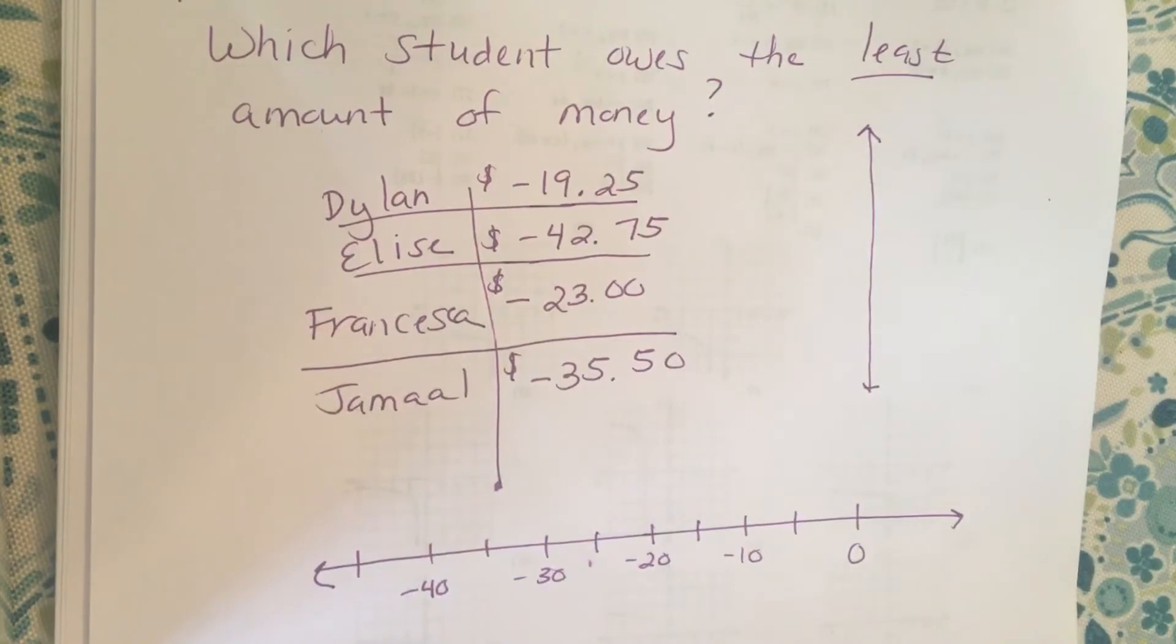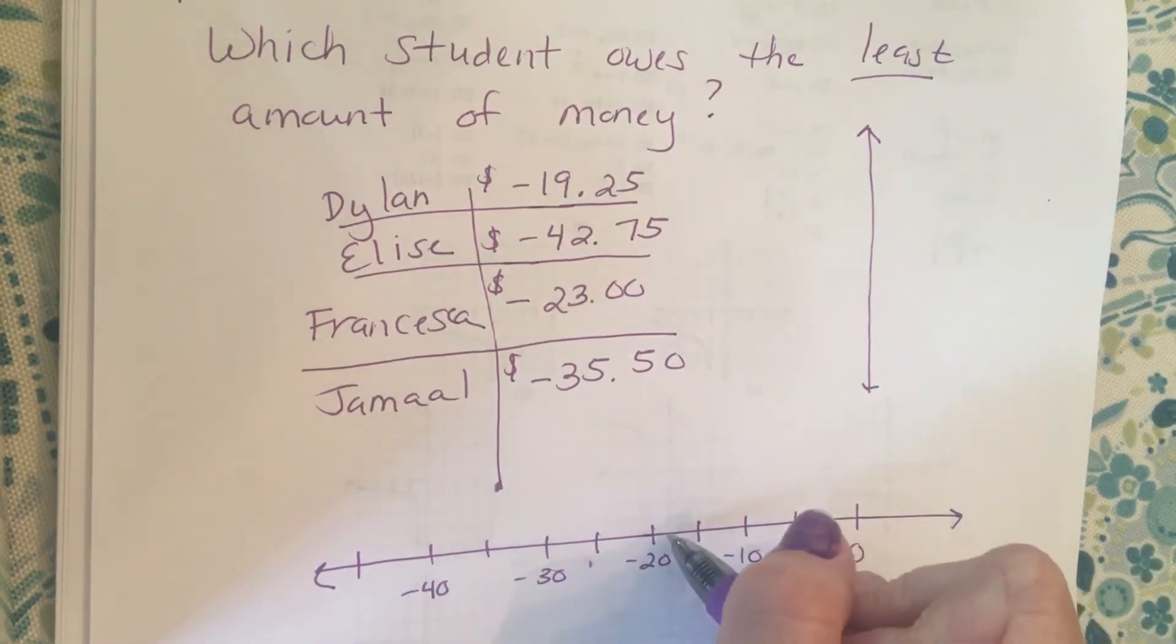I'm gonna plot everybody on the number line and we're gonna see who's actually closest to zero, because they're the person who owes the least amount of money. So Dylan is negative 19 dollars and 25 cents, so that's almost at negative 20. So there's Dylan.